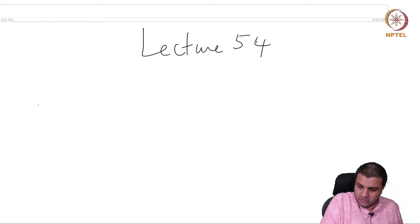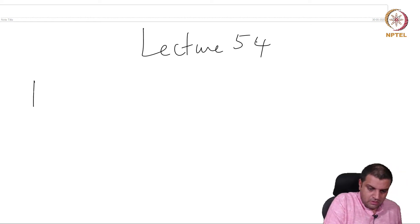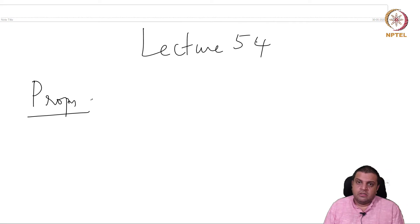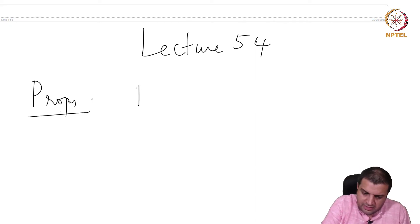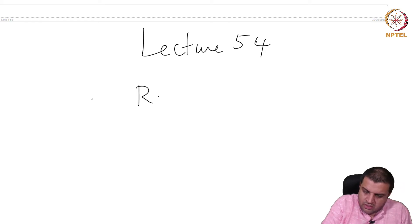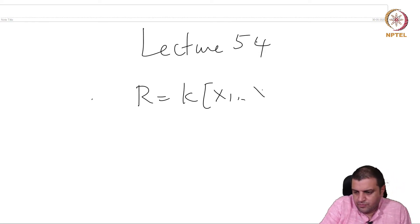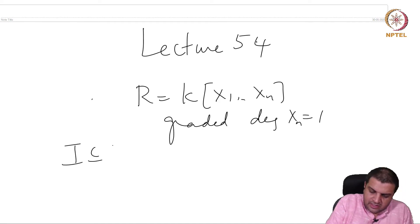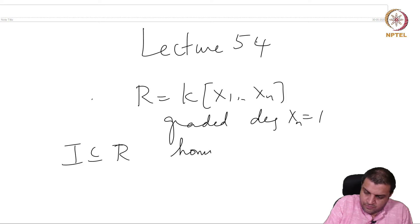Here is a proposition. In this lecture we are always working with the graded case. R is a polynomial ring, graded, with degree of x_n equal to 1, and I inside R is a homogeneous ideal. Okay, proposition.